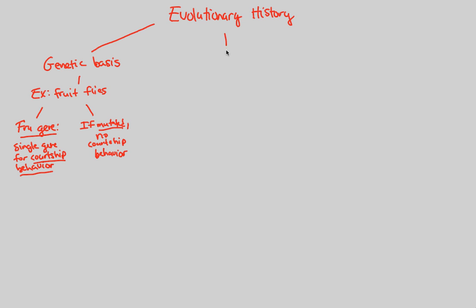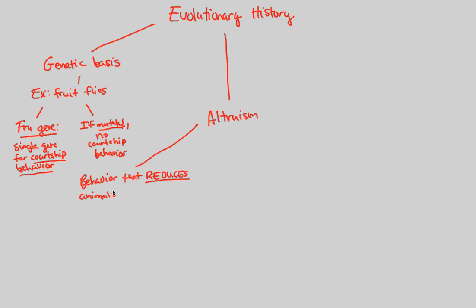In terms of evolutionary history, a very important idea to understand about behavior is altruism. When we think of altruism, we think of being nice — altruistic people always think about others. The same idea applies in animal behavior. Altruism in animal behavior is defined as a behavior that very clearly reduces an animal's individual fitness. The one completing the altruistic behavior has their individual fitness highly reduced. Everything Darwin has said tells us that anybody with reduced individual fitness will not be selected for — yet altruism has something very unique.